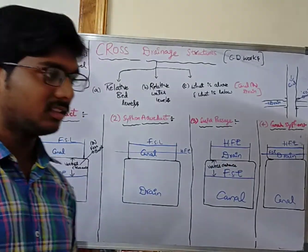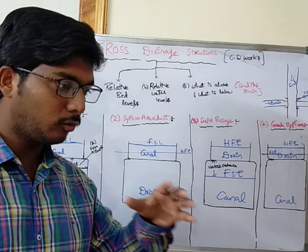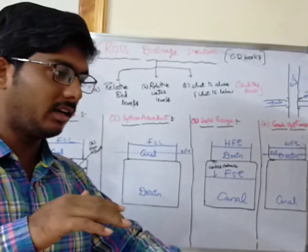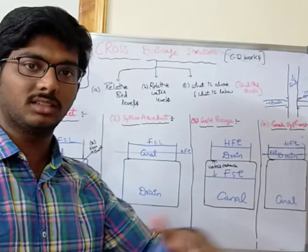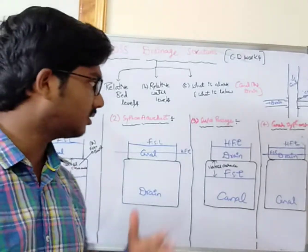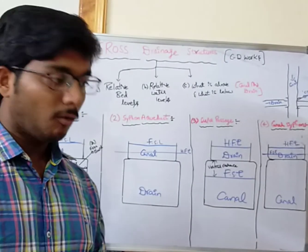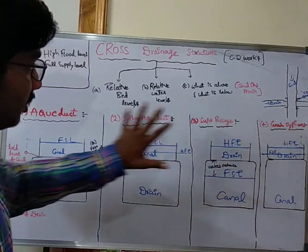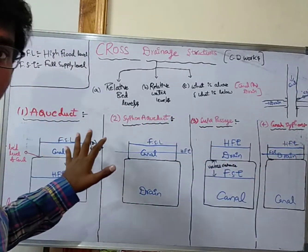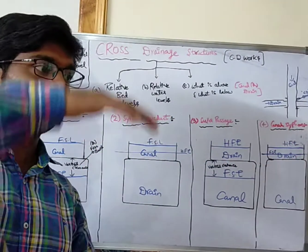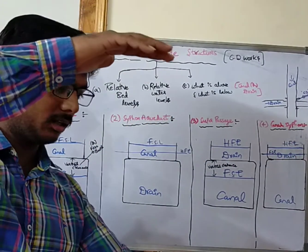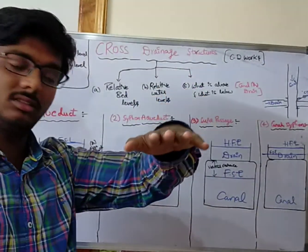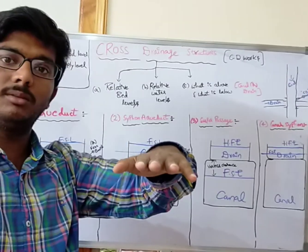These four structures are constructed when two flow lines meet each other — either a canal meets a drain or a drain meets a canal. They are built when the two waterways meet at different levels, with the canal either flowing on top or the drain flowing below, or the drain on top and the canal flowing below.